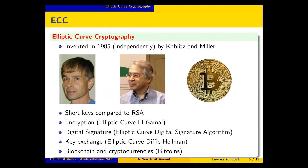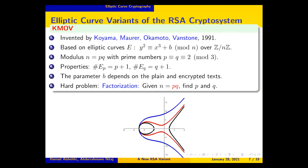There are many variants of the RSA cryptosystem; some are based on elliptic curves. For example, KMOV is a cryptosystem based on elliptic curves, invented by Koyama, Maurer, Okamoto, and Vanstone in 1991. It is based on elliptic curves with a short equation mod n, where n is the RSA modulus — the product of two primes p and q — with the property that the number of points modulo p is equal to p+1.